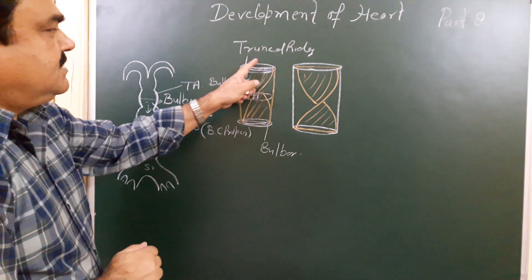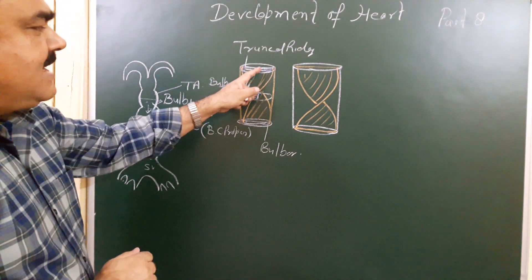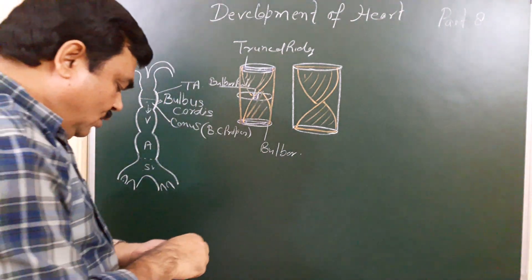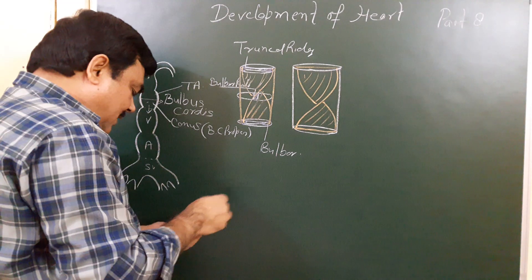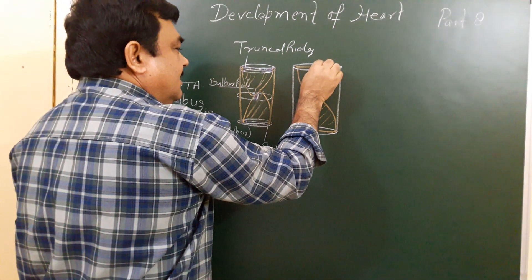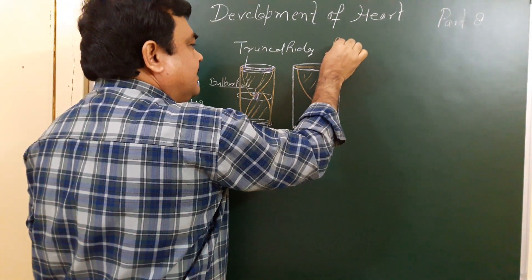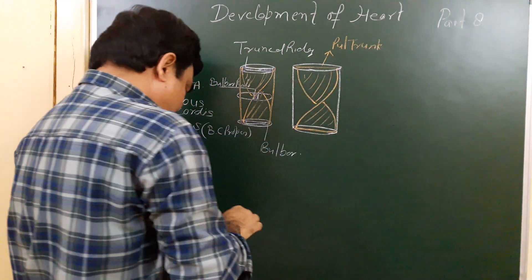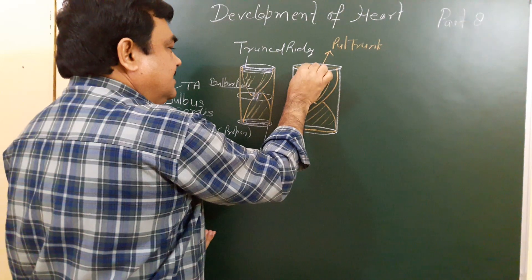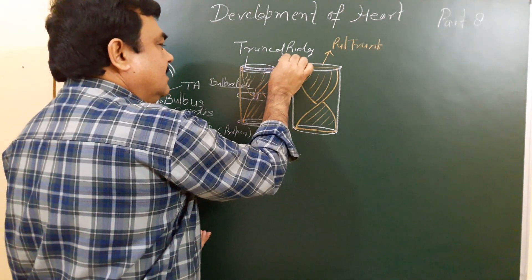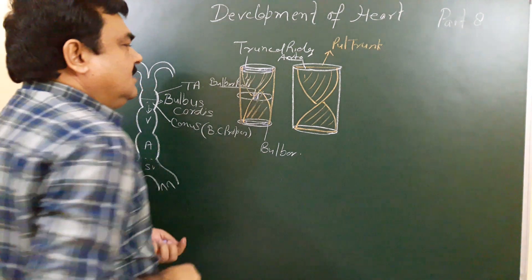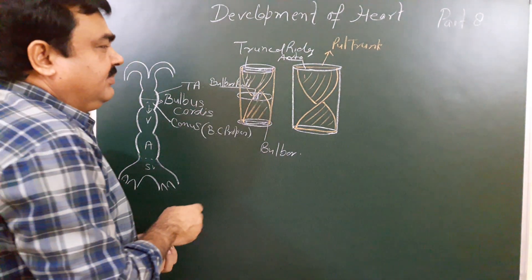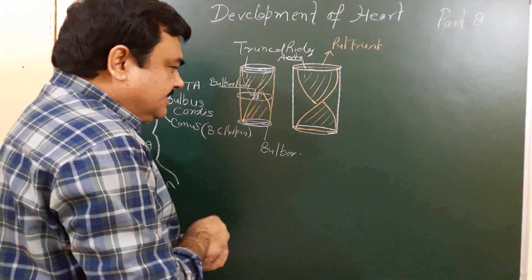By this spiral septum, the truncus arteriosus is divided into two tubular structures. One structure is the pulmonary trunk and the other is the aorta. So the aorta and pulmonary trunk are formed — in the pulmonary trunk flows deoxygenated blood.